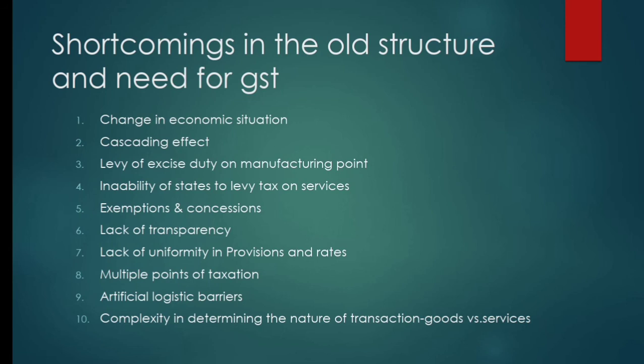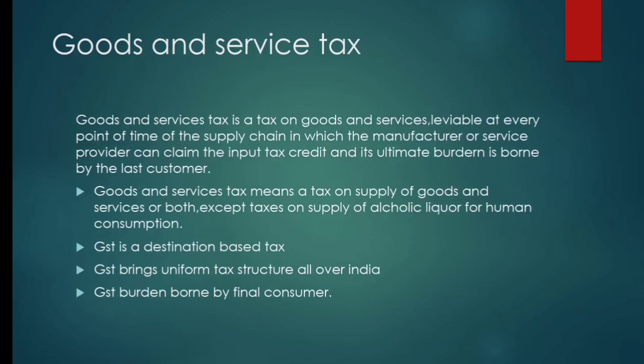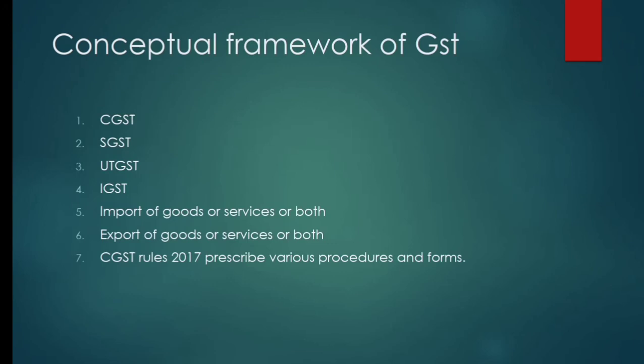This was also a shortcoming of the old tax structure, which gave rise to the need for GST. The tenth shortcoming is complexity in determining the nature of a transaction — that is, goods versus service. Many times we could not distinguish whether something should be called goods or service, like software. If we levy any tax on software, it was confusing which category to place it in — whether to treat it as goods or service. This was also a shortcoming of the old tax structure, giving rise to the need for GST.